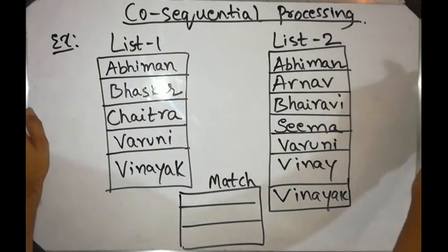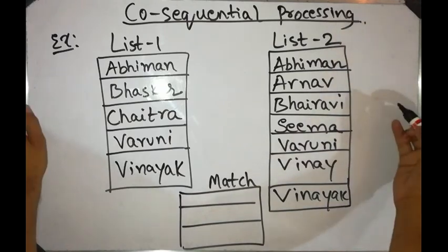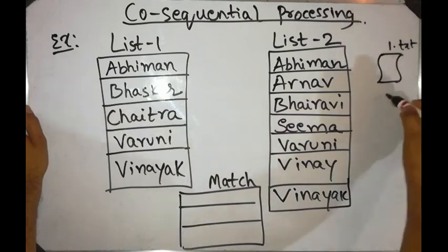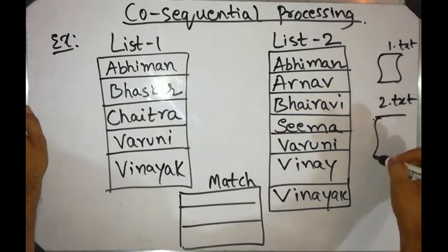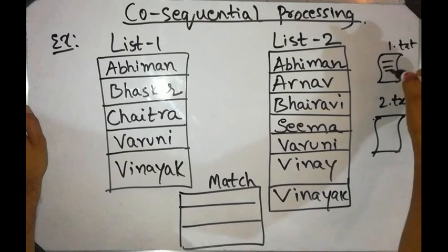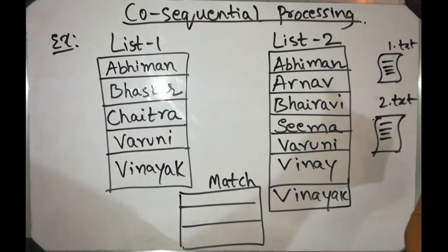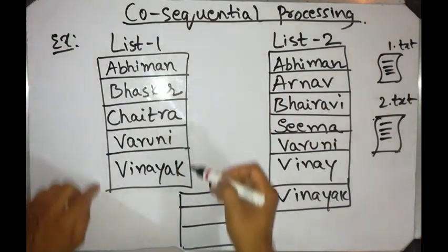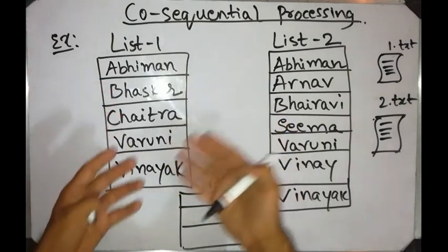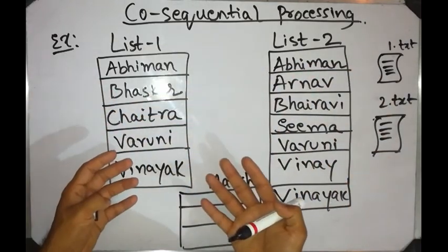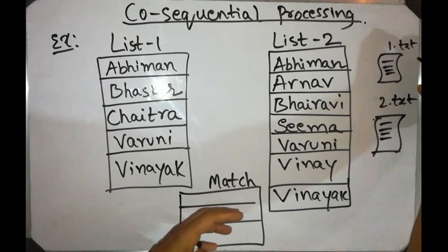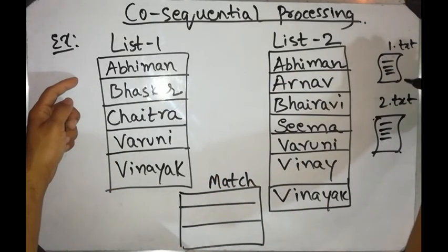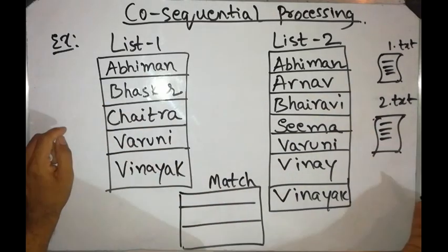In the program we are going to see next, we are going to have two lists in two separate files — 1.txt and 2.txt — with names written in them. We will read each of these two files, populate them into an array, and sort it. So the lists you are seeing here are sorted. This is list one from 1.txt and list two from 2.txt.